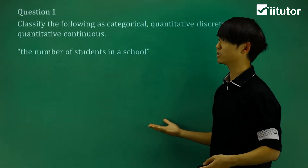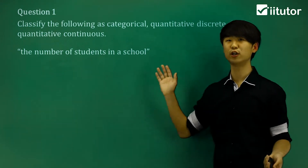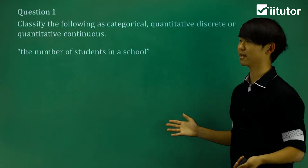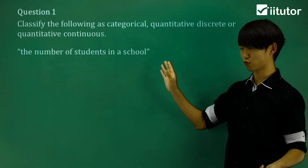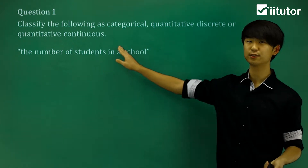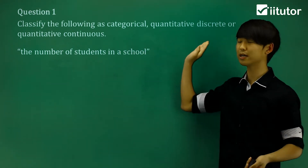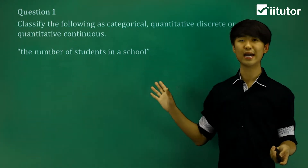Looking at question one, we're going to classify the following as either categorical, quantitative discrete, or quantitative continuous. We'll take a look at the difference between discrete and continuous.